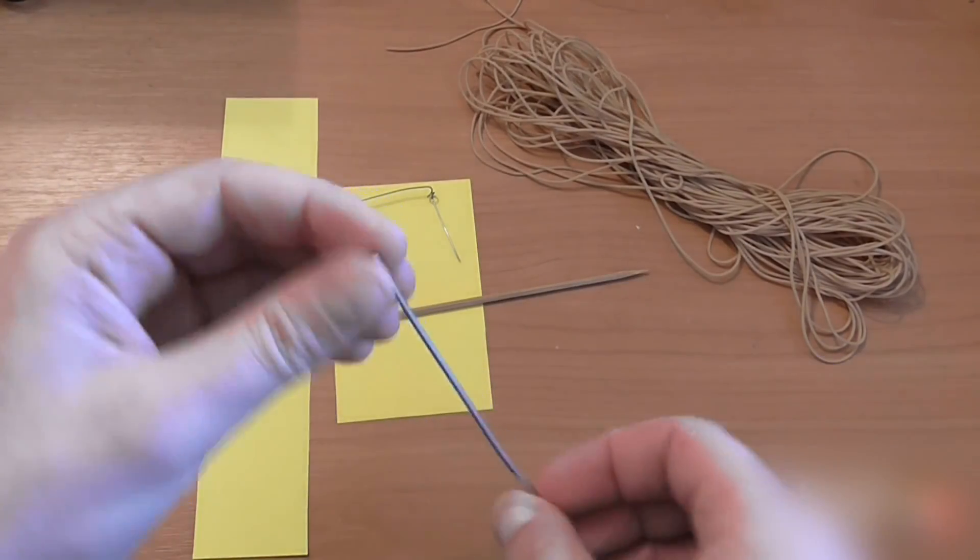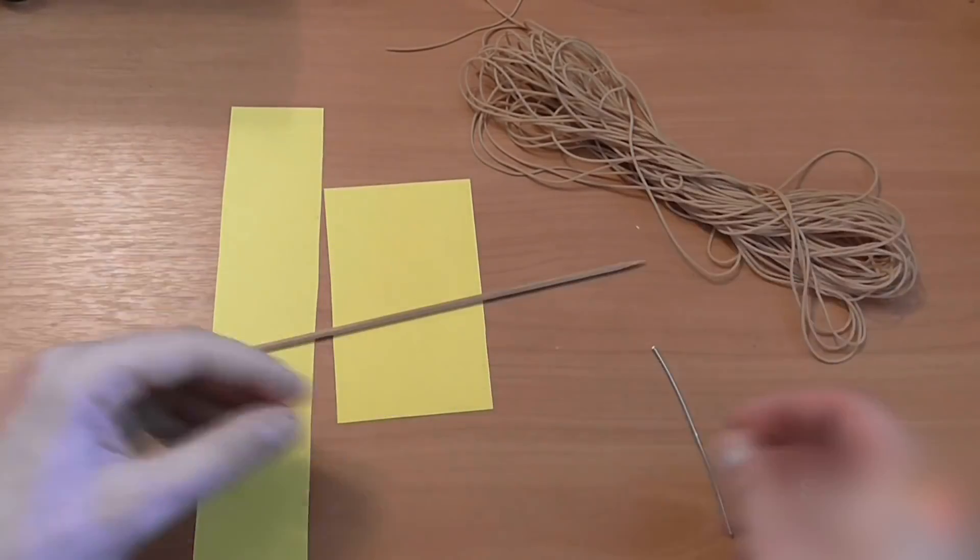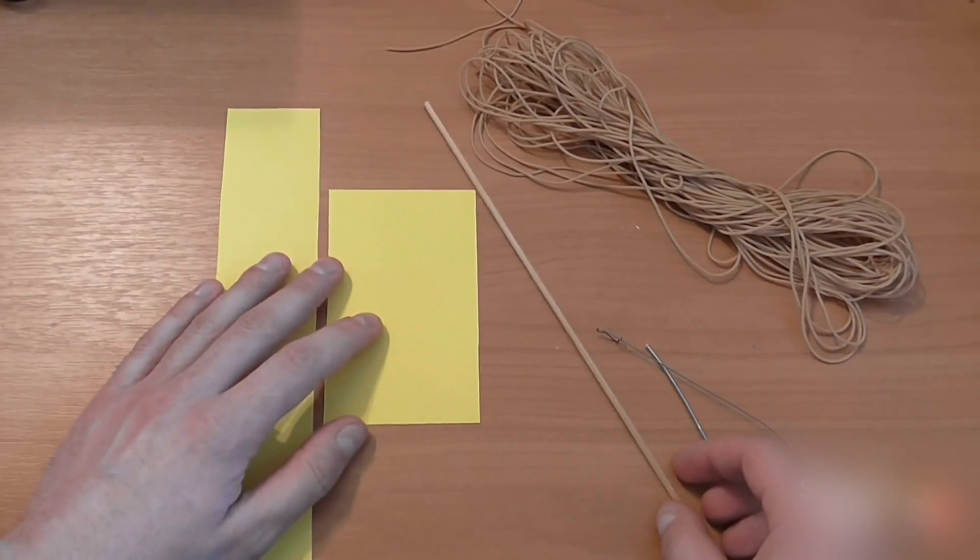What are we going to need? We will need some aluminum wire, a little bit of steel wire, a barbecue skewer, two small pieces of paper, and some fishing rubber band line.